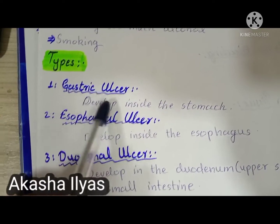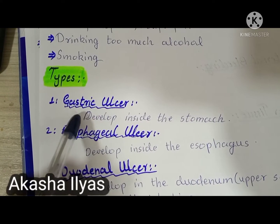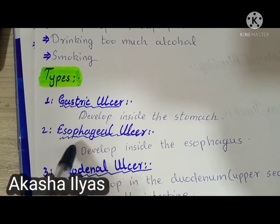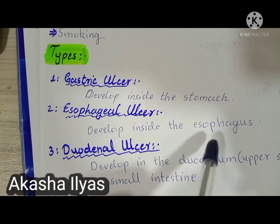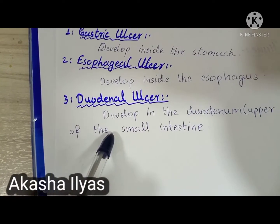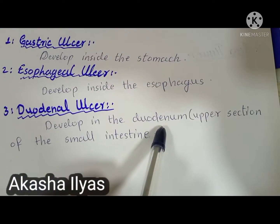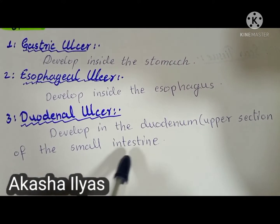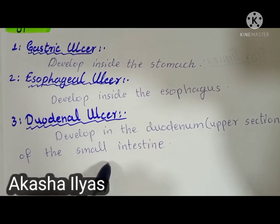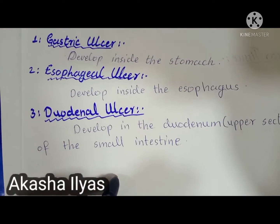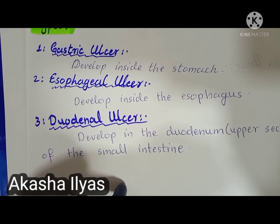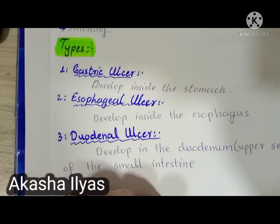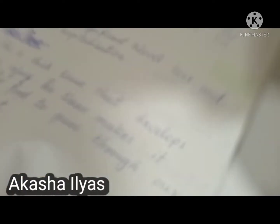There are three types of peptic ulcers: gastric ulcer, which develops inside the stomach; esophageal ulcer, which develops inside the esophagus; and duodenal ulcer, which develops in the duodenum. The duodenum is the upper section of the small intestine. The small intestine has three sections: duodenum (first), jejunum (middle), and ileum (third).